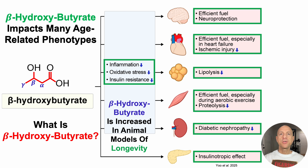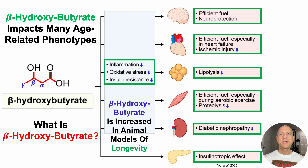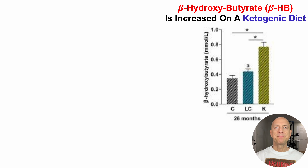Additionally, beta-hydroxybutyrate is increased in animal models of longevity. Starting off with data for mice on a ketogenic diet: on the y-axis, we've got beta-hydroxybutyrate circulating levels.